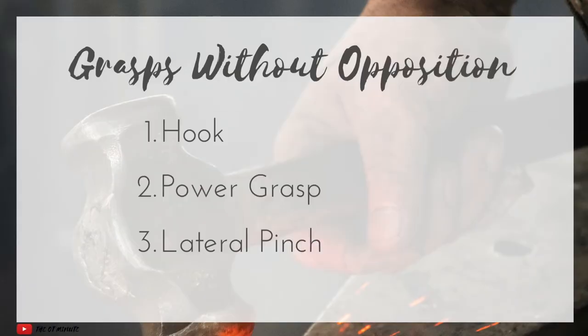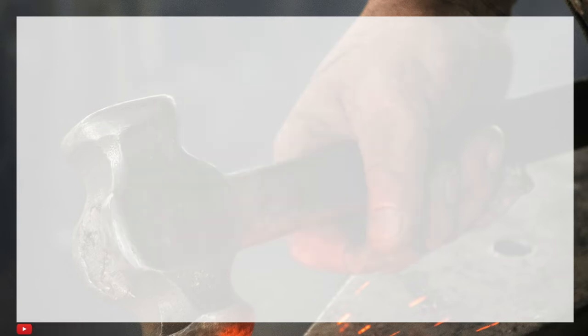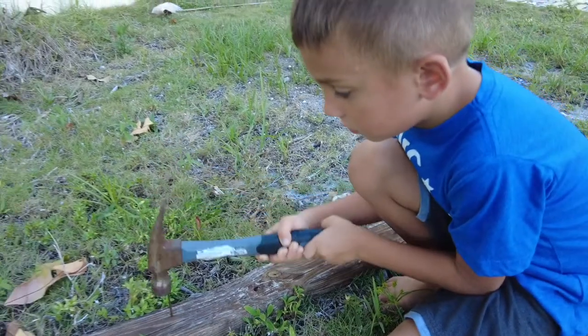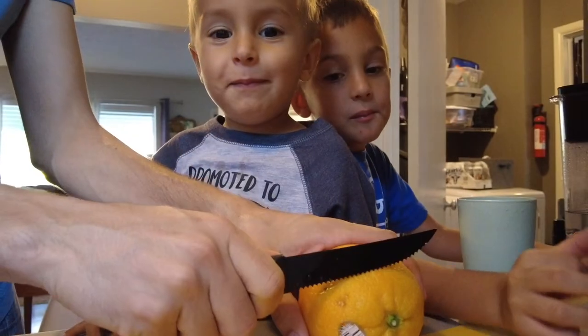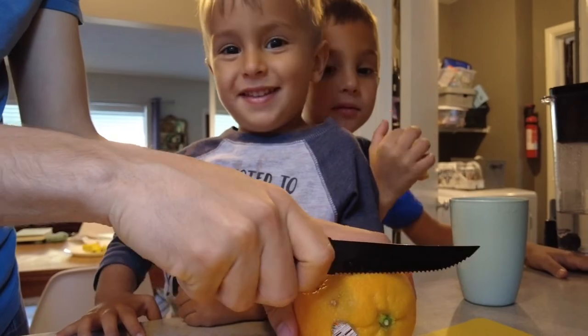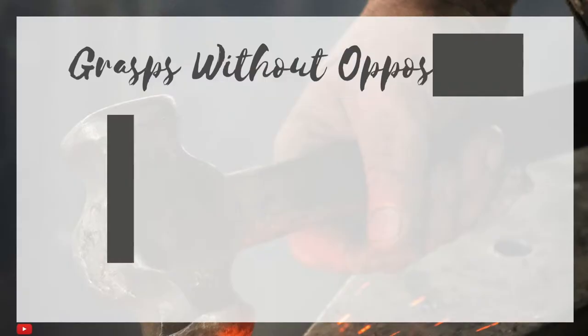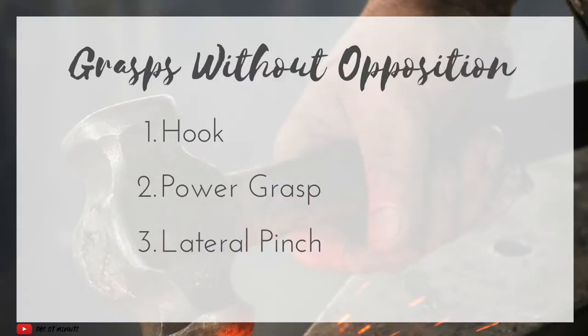The power grasp is also a really common grasp and it's often associated with handling tools. The object rests in the hand obliquely, and the ulnar digits are more flexed than the radial digits. The example that always comes to mind for me would be holding a hammer and hammering. But we also use this constantly with brushing our teeth, cutting food, combing, or brushing our hair.